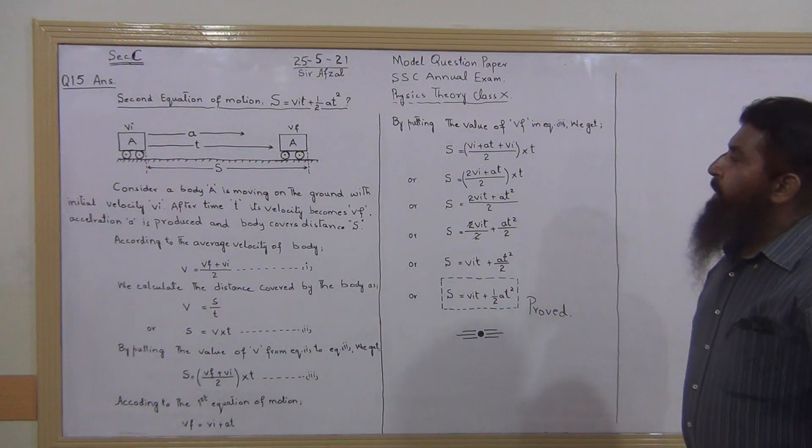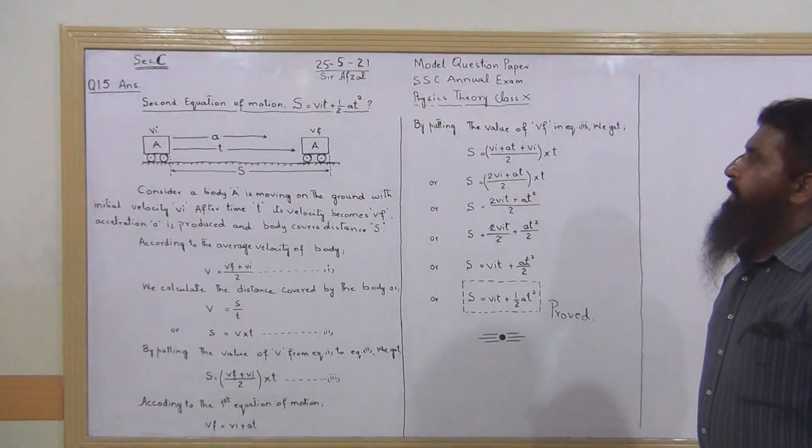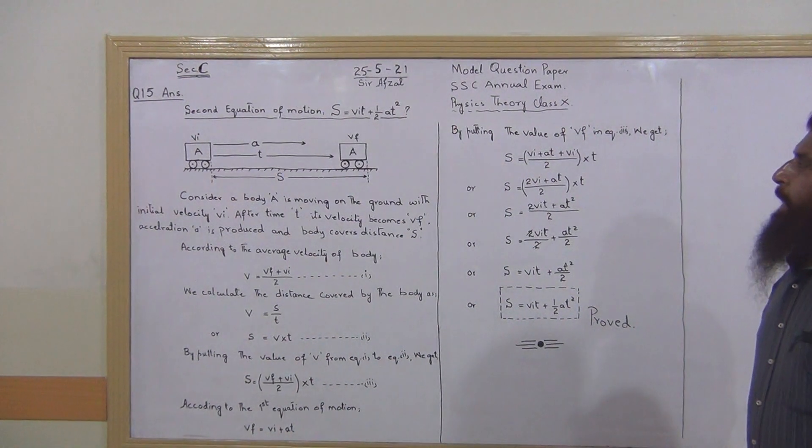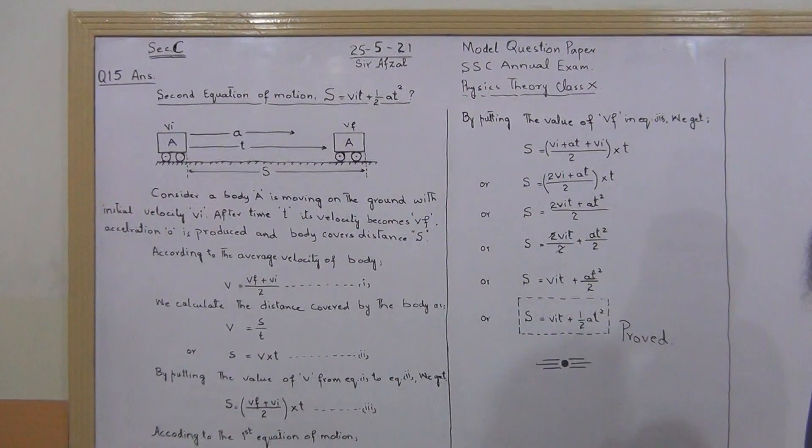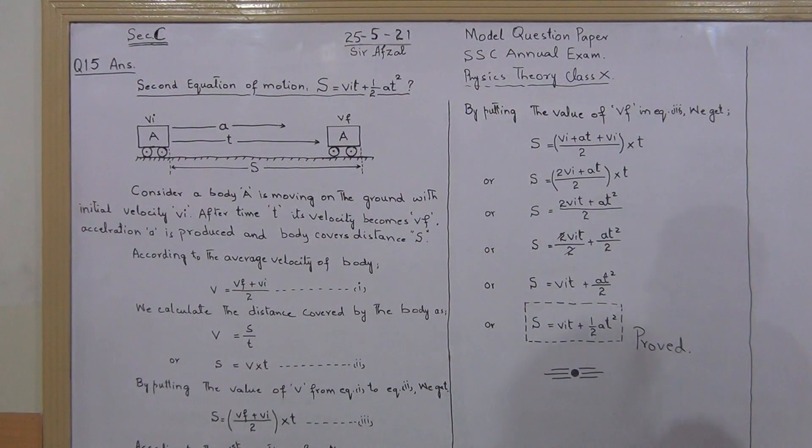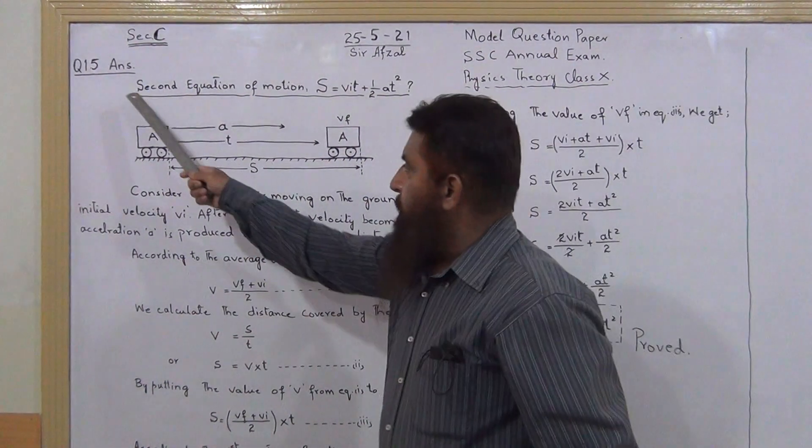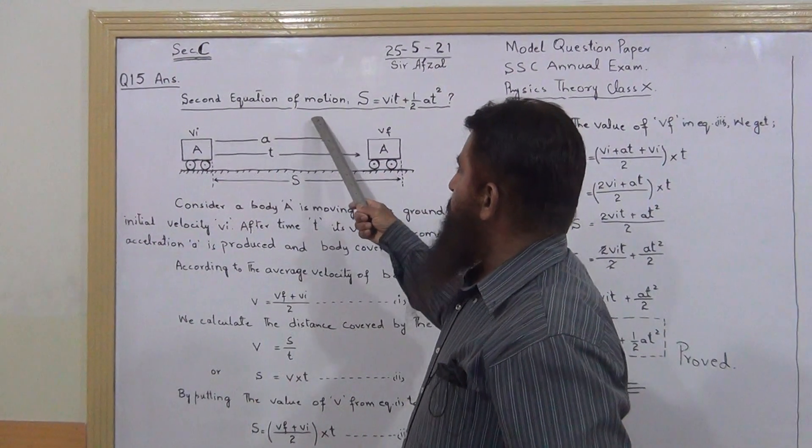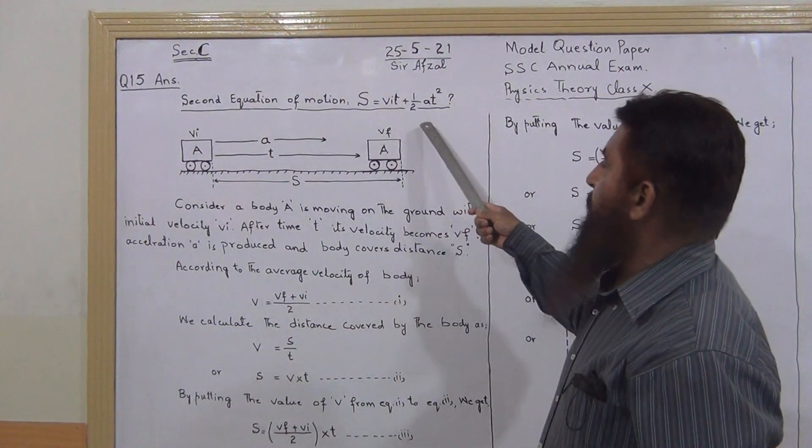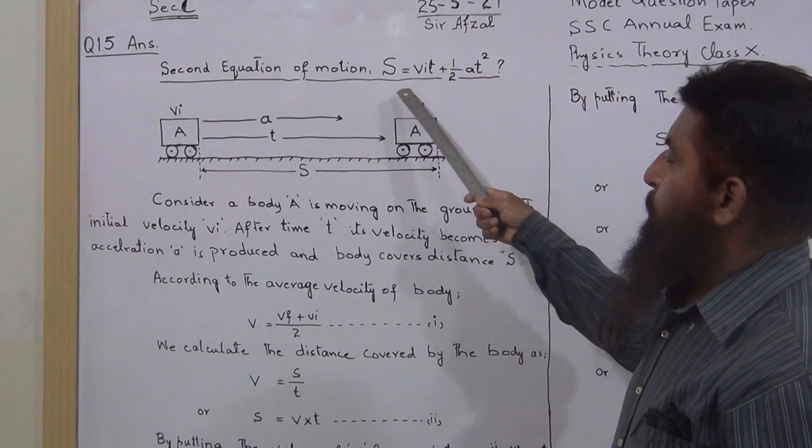Okay dear students, welcome to the last question of model question paper SSC annual examination physics theory class. Question number 15: second equation of motion S = VIT + 1/2 AT². You have to prove it.